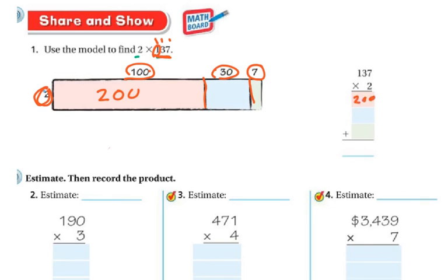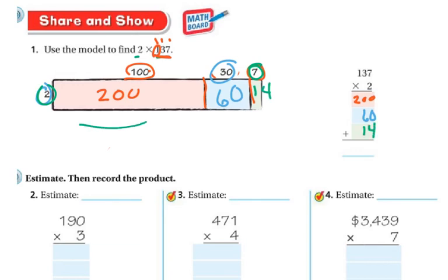And then in the blue, I'm going to have 2 and do 2 times 30. Well, 2 times 3 is 6, and my 0 makes it 60, so in the blue I have 60. And then in the green, I have 7 times 2, which is 14, so over here in the box I'm going to have 14. Then I have to add up all 3 of my partial products to get my final answer. So 4 plus 0 plus 0 is 4; 6 plus 1 is 7; and 2 plus nothing is 2. So my answer is 274.